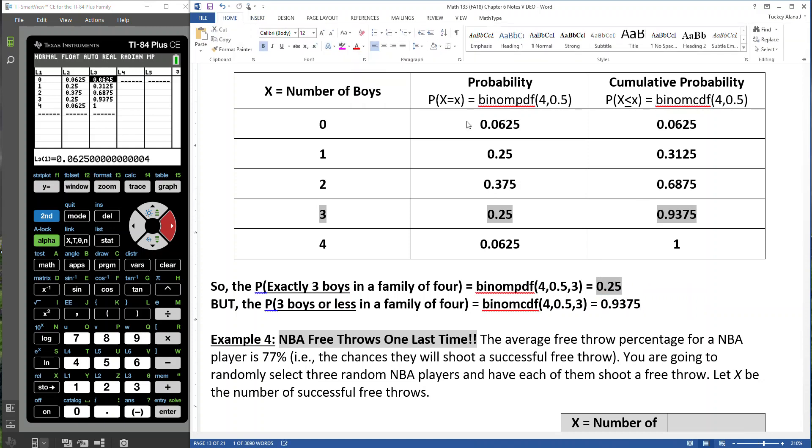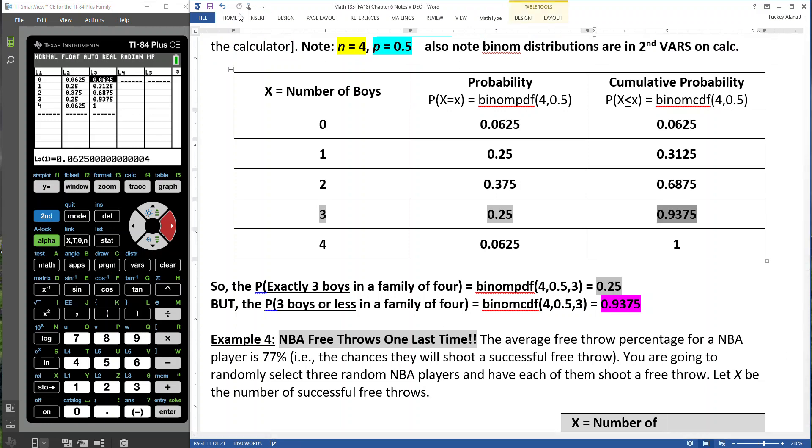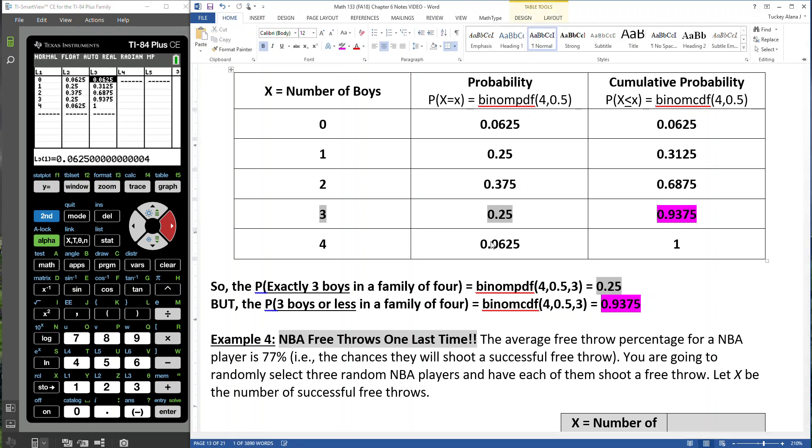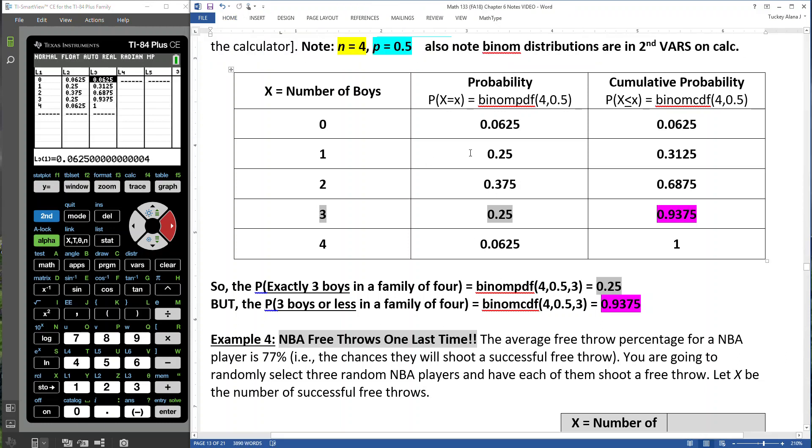And that would be right here. And that's this number right here, 0.9375. So one's talking about exactly three, exactly two. And the other one's talking about two or less. This number here is three, or excuse me, that number there is two or less. This pink number right here is three or less, and so on.